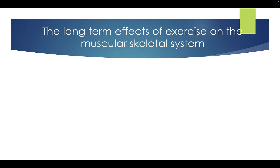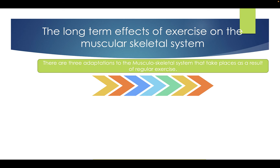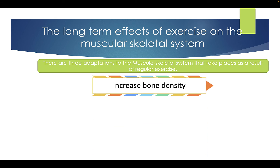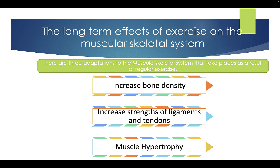The long-term effects of exercise on the musculoskeletal system. There are three adaptations to the musculoskeletal system that take place as a result of regular exercise: increased bone density, increased strength of ligaments and tendons, and muscle hypertrophy.